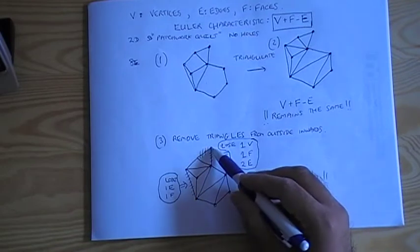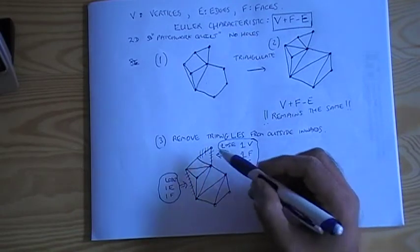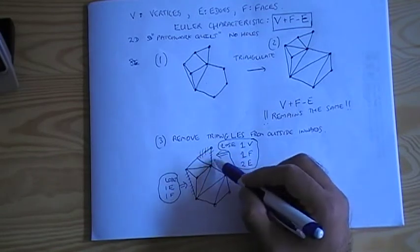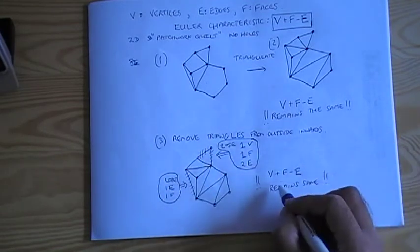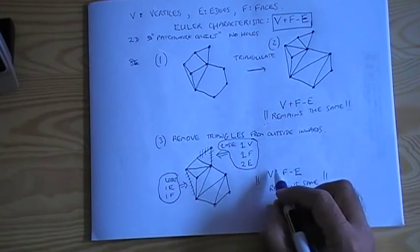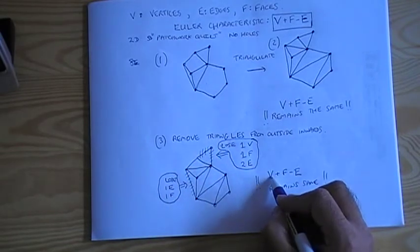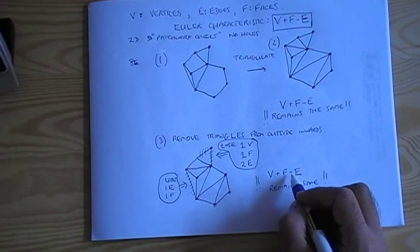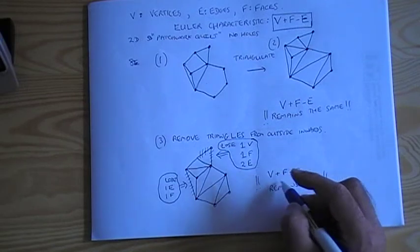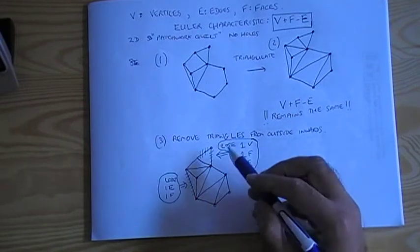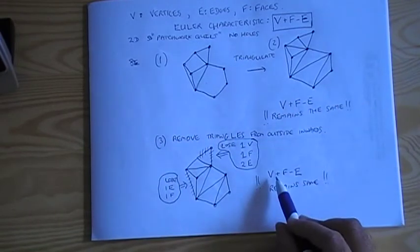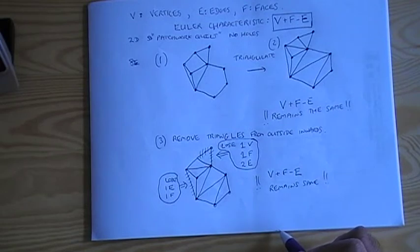So by removing this triangle, we lose one vertex, that vertex there. We lose one face, this face here. And we lose two edges, the two edges that we've knocked off. And so you see, in knocking this type of triangle off, V has gone down by one, F has gone down by one, and E has gone down by two. But then because of this minus sign, those changes cancel each other out. And so by losing this triangle, we end up with a smaller shape where V plus F minus E remains the same.